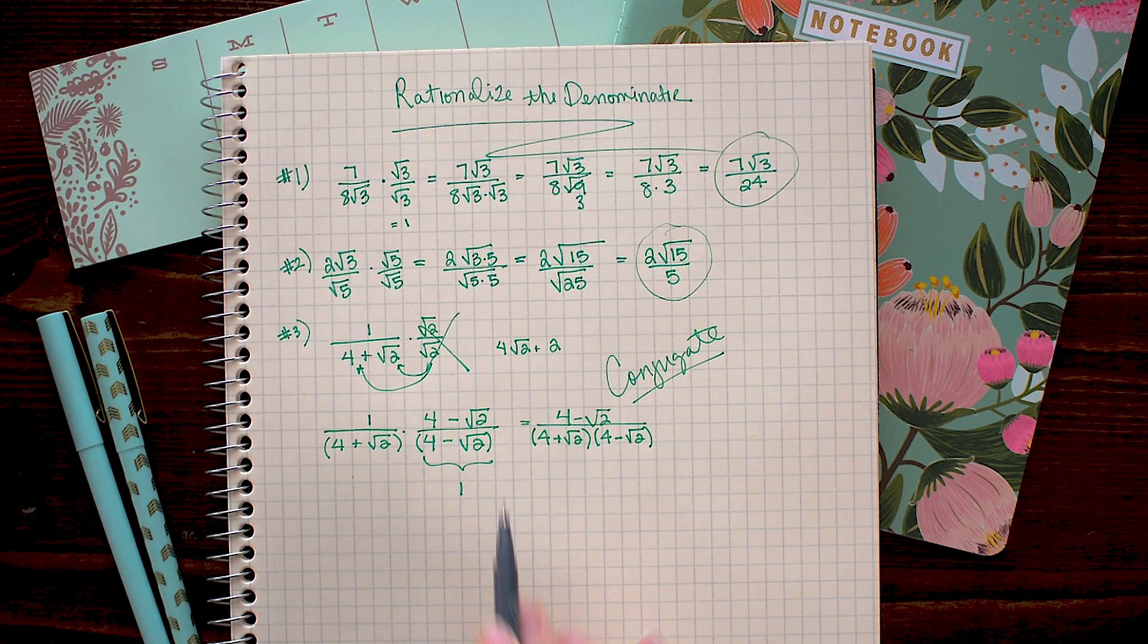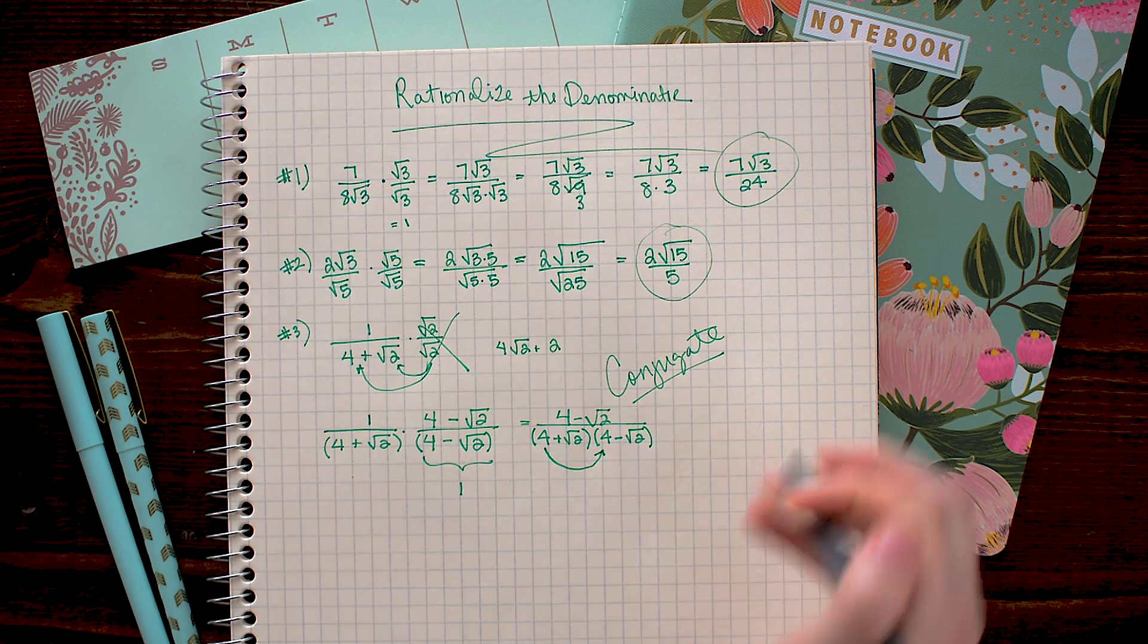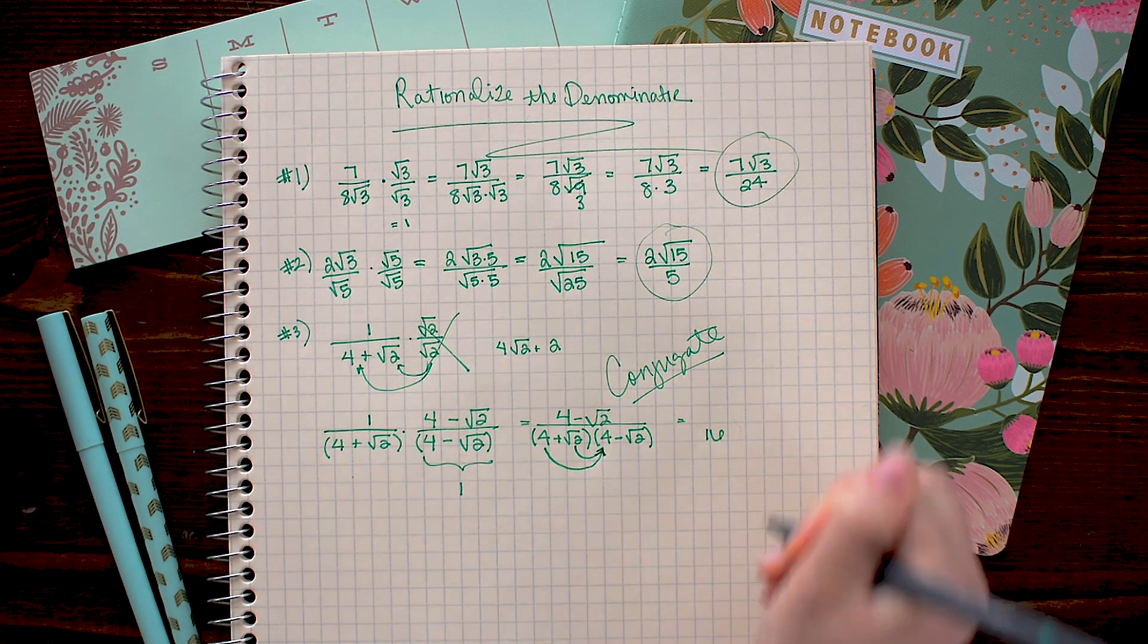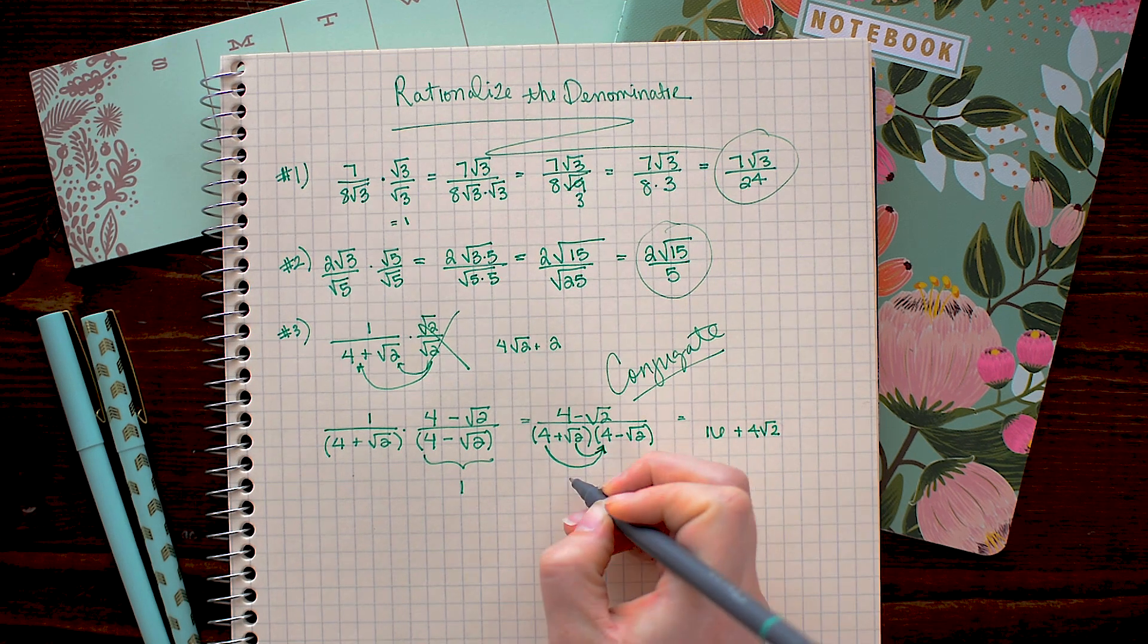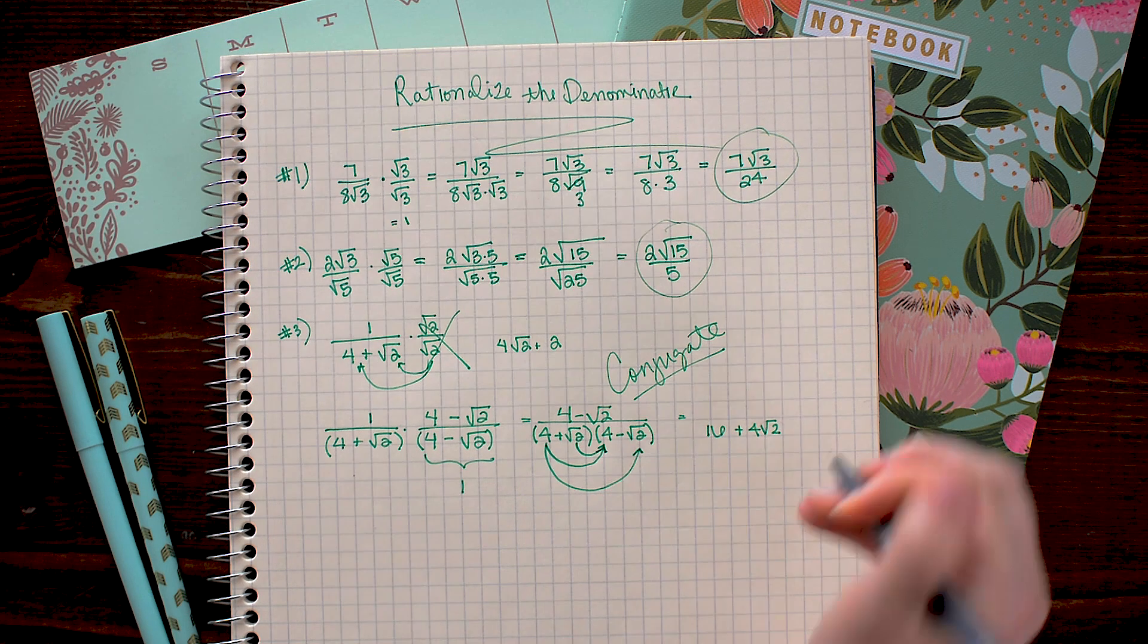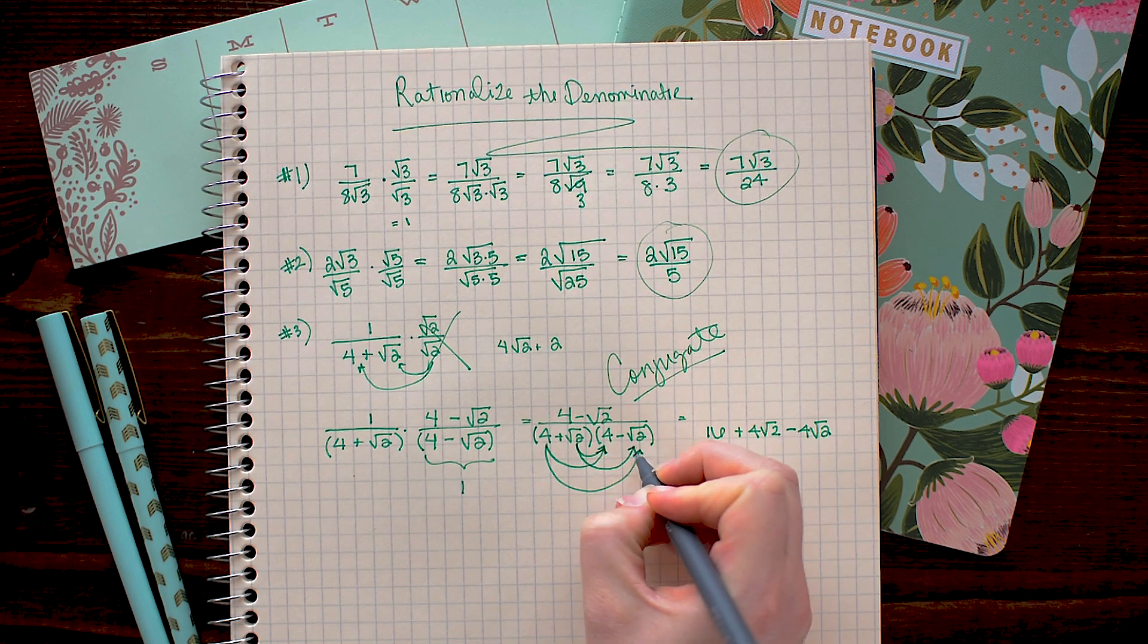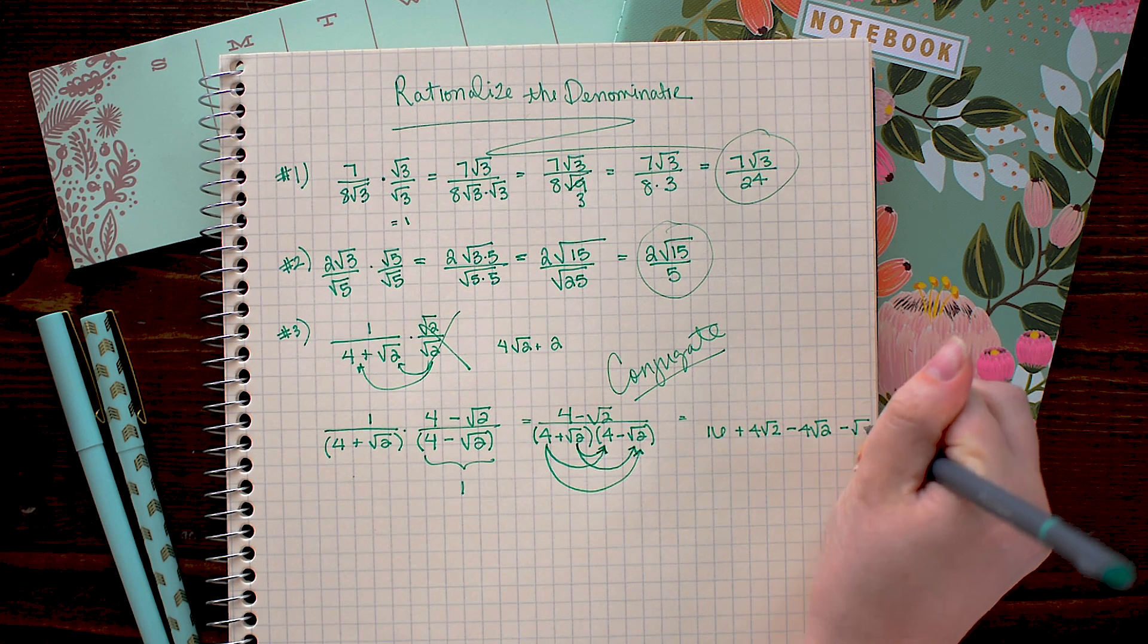Okay, let's go ahead and FOIL now. So, 4 times 4 is 16. Square root 2 times positive 4 is positive 4 square root 2. 4 times negative square root 2 is minus 4 square root 2. And lastly, square root 2 times negative square root 2 is negative square root 4.